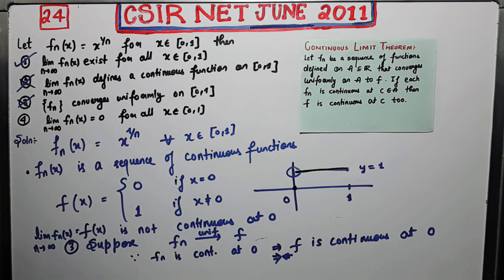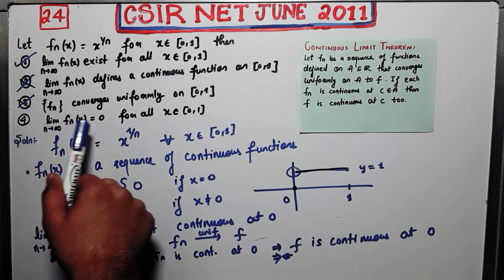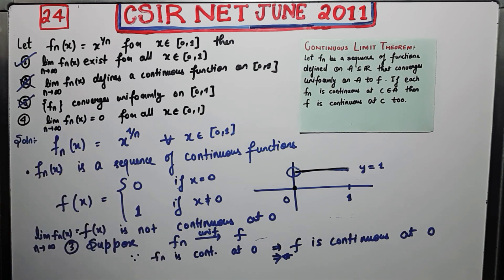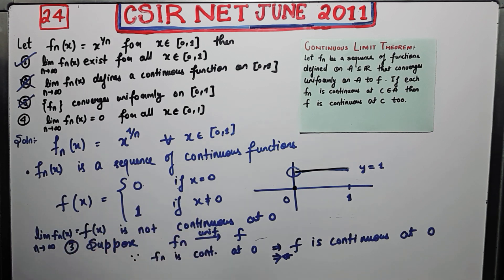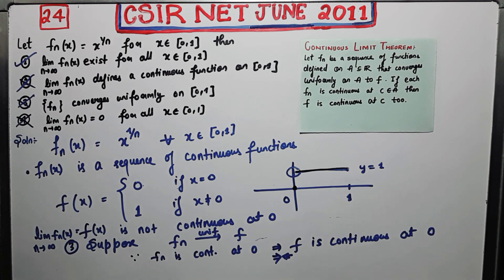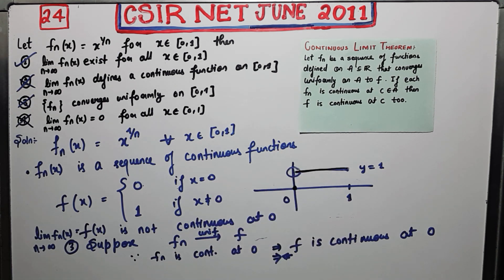The fourth option says the limit of fn(x) equals 0 for all x in [0,1]. But we already know the limiting function is 1 for all nonzero x in [0,1], so it is not zero everywhere. Therefore option four is also incorrect. This Continuous Limit Theorem is very important for the uniform convergence topic in real analysis, and you must have covered it in your course. Thank you guys.